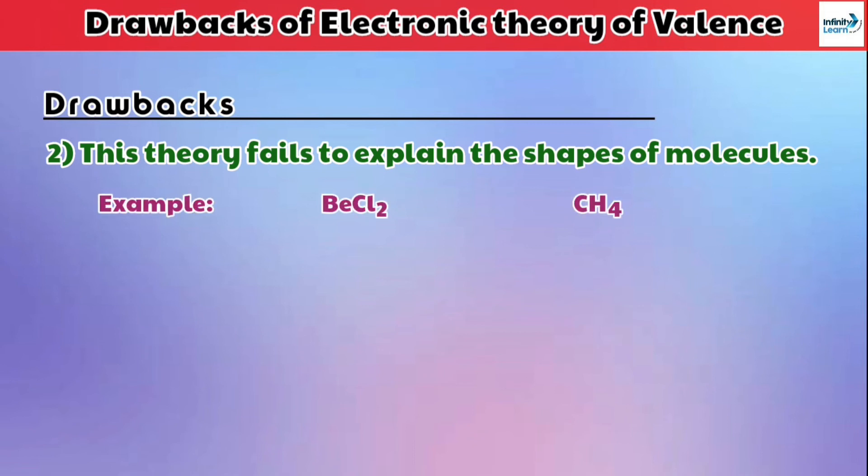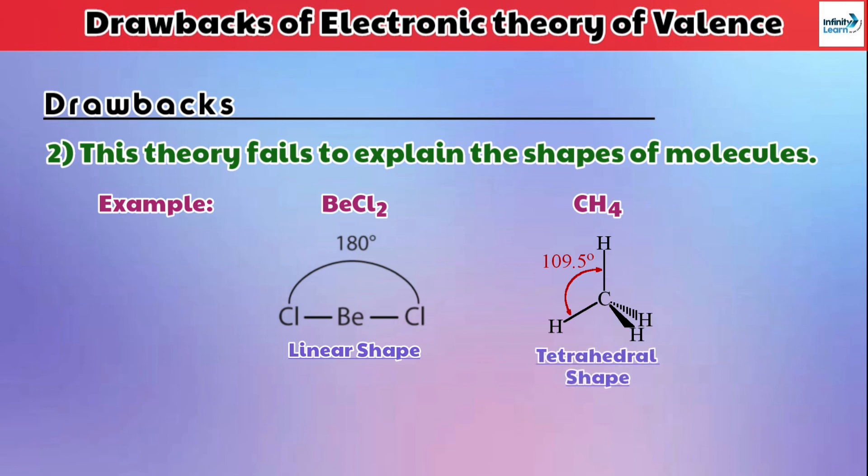if we see the molecule of BeCl2, you can see it is a linear shape molecule because the angle between the two chlorine atoms is 180 degrees. Similarly, in CH4 molecule, its shape is tetrahedral and its bond angle is 109.5 degrees. Why these atoms combine at such angles and form different shapes was not explained in this theory.